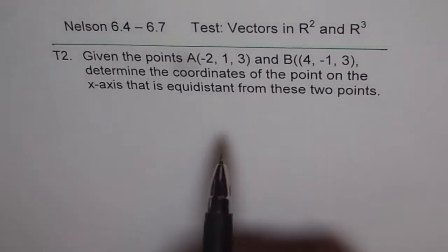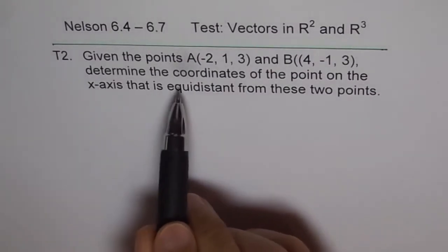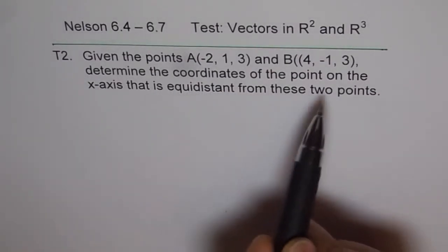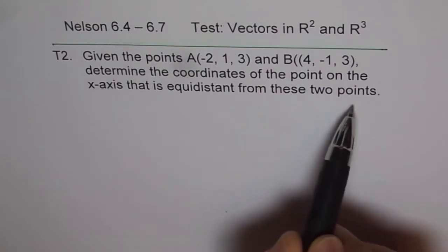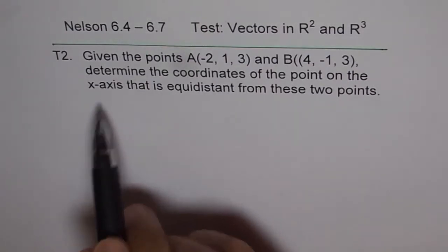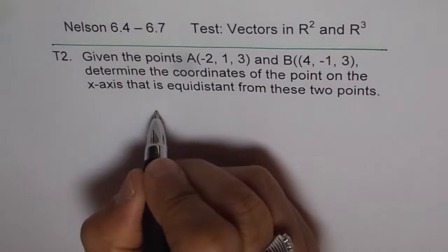Given the points A and B, determine the coordinates of a point on the x-axis that is equidistant from these two points. So what could be a point on the x-axis? Think about that.